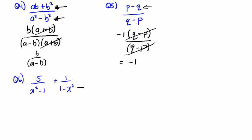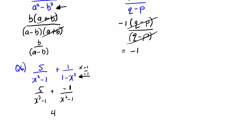For question 6, multiply top and bottom by minus 1 to get minus 1 on top and x squared minus 1 on the bottom. So we have 5 over x squared minus 1, and with the plus it gives 5 minus 1, which is 4 over x squared minus 1. Getting the denominators the same is the key for algebraic fractions. Hopefully you've done well in this lesson — progress now to Algebra 4.